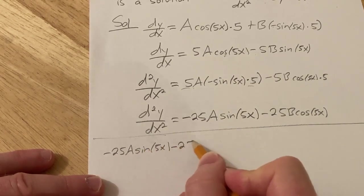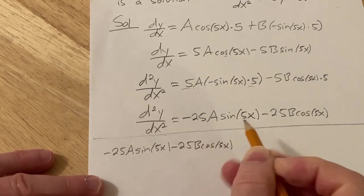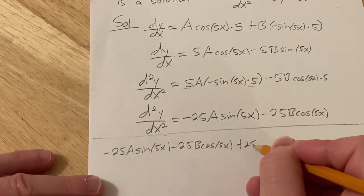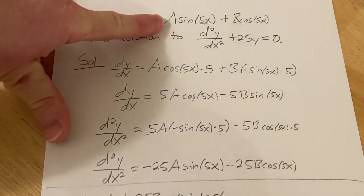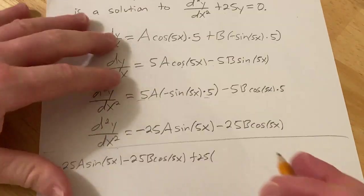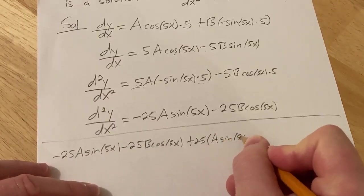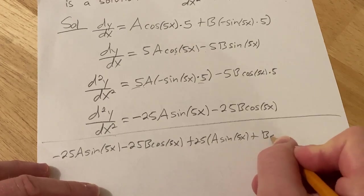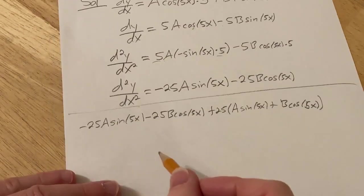minus 25B cosine 5x, plus 25 times y. So y is up here. It's our original function. So A sine 5x, plus B cosine 5x. So A sine 5x, plus B cosine 5x. And all of this should be equal to 0.